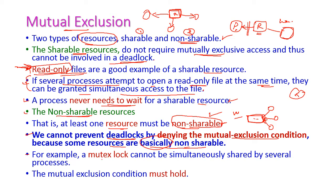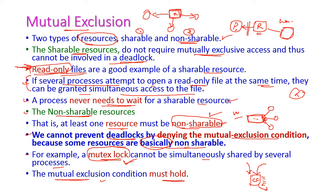For example, mutex locks cannot be simultaneously shared by several processes. When a critical section is involved, the instructions are very sensitive, and the mutex lock allows only one process to enter the critical section. Once the process completes its execution, it exits, and then only other processes are allowed to enter. This is the purpose of mutex locks — we cannot avoid mutex locks when it comes to critical sections. So mutual exclusion cannot be avoided in our system; we have to hold it.